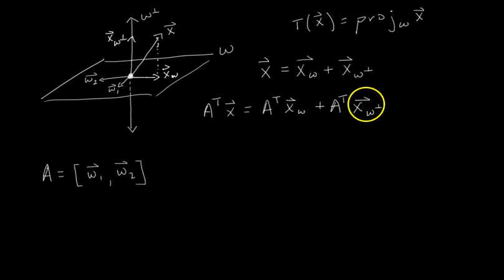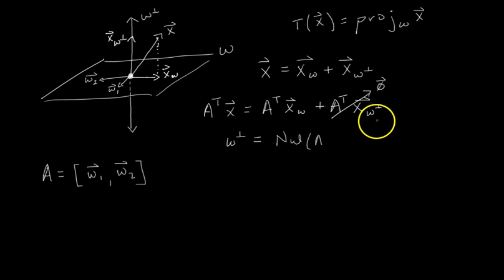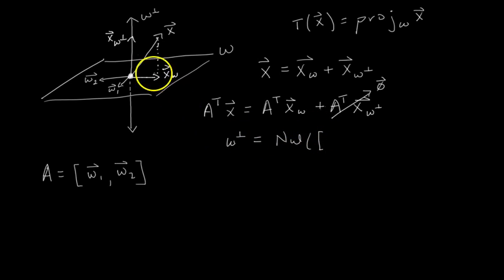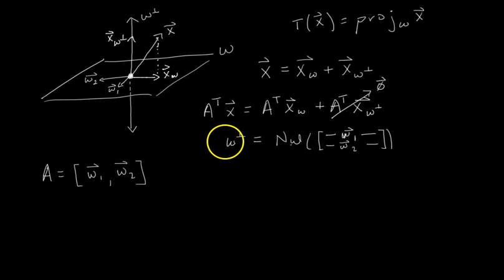Here's something important: A transpose times X sub W perp equals the zero vector. Why? If you remember from the last video, W perp is defined to be the null space of the matrix whose rows are the basis vectors for W. So the first row would be W1 and the second row would be W2. The null space of this matrix — whose rows are the basis vectors for W — is W perp by definition.